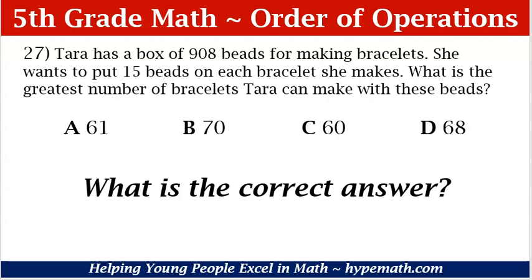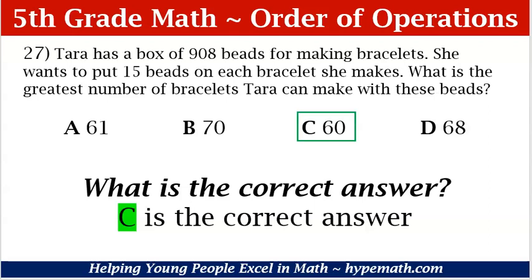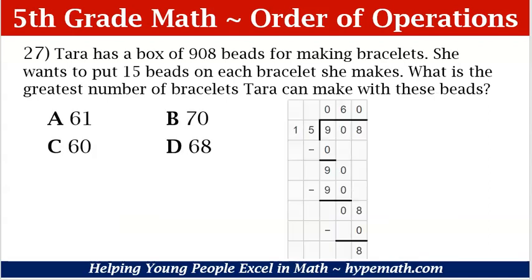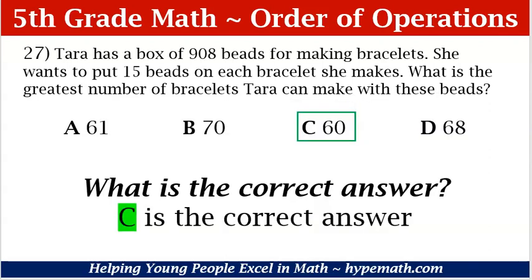What is the correct answer? Our correct answer is C: 60. Even though we have a remainder of 8, Tara wants to put 15 beads on each bracelet — that means there are 8 beads left over. That is why it would only be 60 complete bracelets, and she will have 8 beads left over. That is why C, 60, is the correct answer.